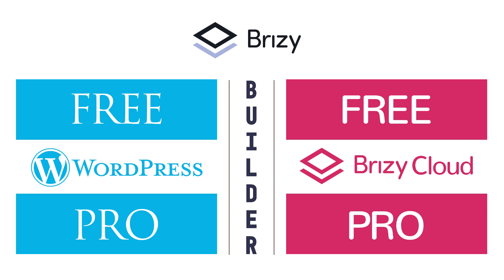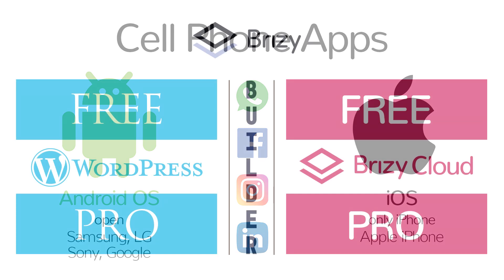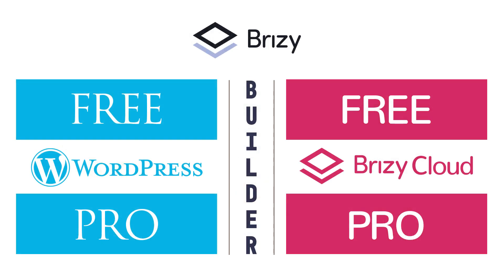Let's talk a little bit more about this so you can have a better understanding of the difference. I compare it to an Android operating system versus the iOS system from Apple iPhone. You have cell phone apps like WhatsApp, Facebook, Instagram, and LinkedIn, and you can have these apps on both devices. But if you've ever seen both phones, the apps are slightly different when you compare them between the two systems. The systems are different, they do things a little differently — and that's the same thing when it comes to the Brizzy WordPress plugin and Brizzy Cloud.